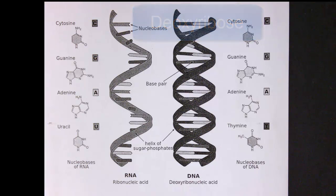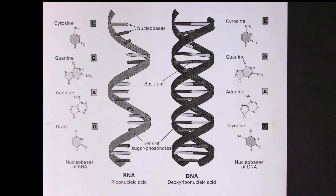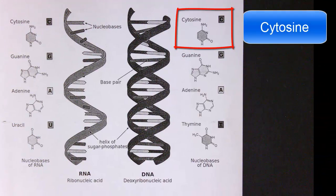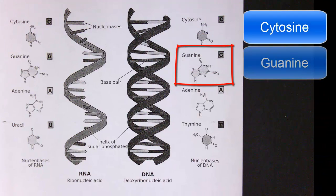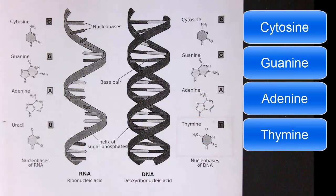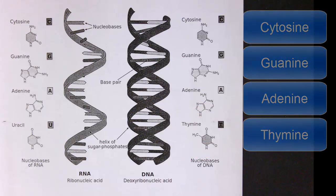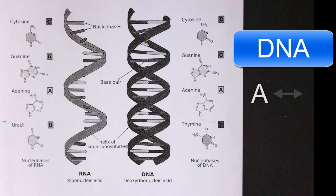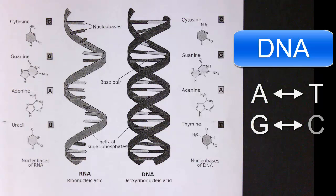There are four bases in DNA: cytosine, guanine, adenine, and thymine. The base pairing rules for DNA are adenine pairs with thymine and guanine pairs with cytosine.